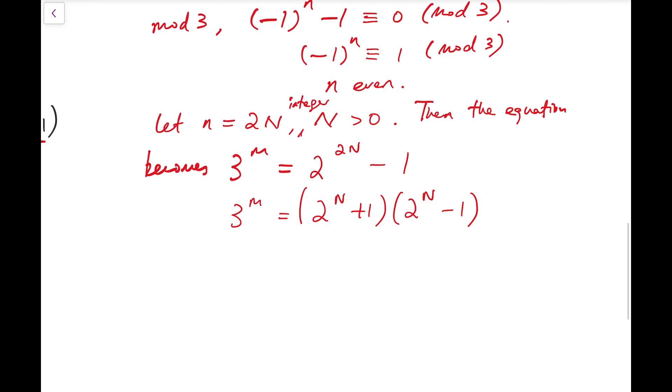And these two numbers, the product is a power of 3. So as 3 is a prime number, that means these two numbers have to be a power of 3 as well.